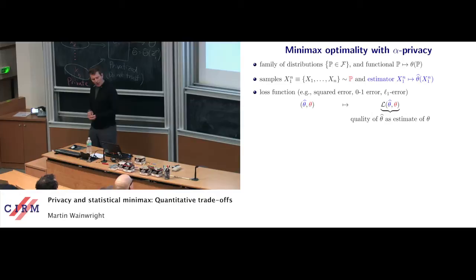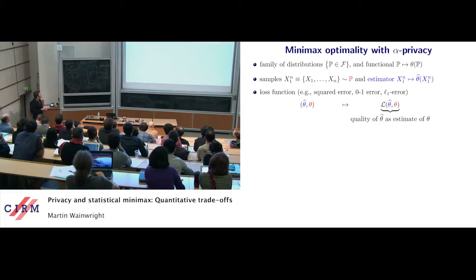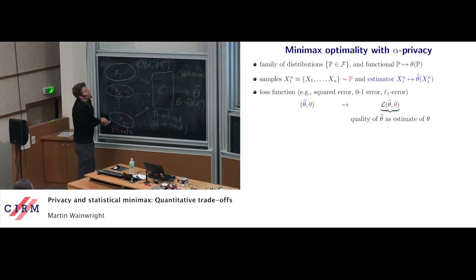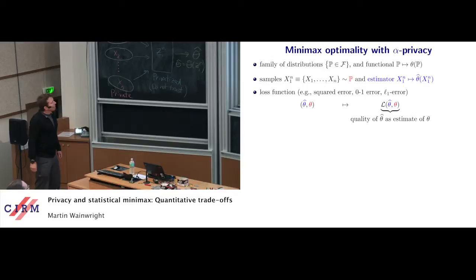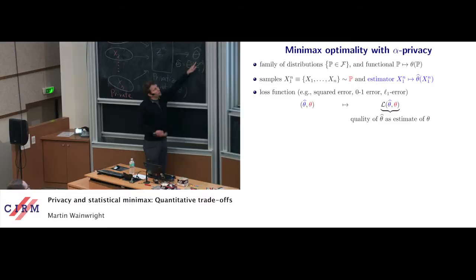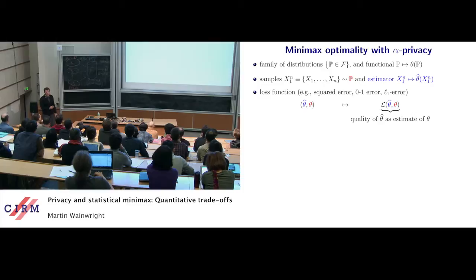Here's the object we're going to study. We're going to study minimax error — the usual notion. We have a family of distributions, script P. The x_i's are drawn from some distribution in this family, and we're interested in theta-hat being an estimate of some functional of P — it could be the mean or the density function. We have our usual loss function measuring the gap between the estimator and the truth.